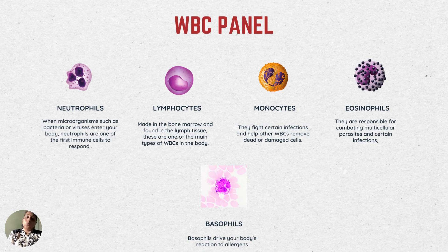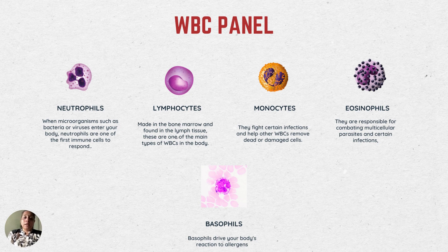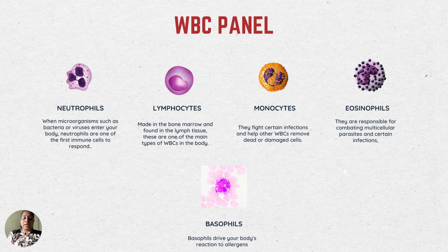Under the WBC panel, we usually look at the following types of WBCs. The first is the neutrophils — when microorganisms such as bacteria or viruses enter our body, neutrophils are one of the first immune cells to respond. Then comes the lymphocytes, which are made in the bone marrow and found in the lymph tissue, and are one of the main types of WBCs in the body. Monocytes fight certain infections and help other WBCs remove dead or damaged cells. Eosinophils are responsible for combating multicellular parasites and certain infections. Basophils drive your body's reaction to allergens.